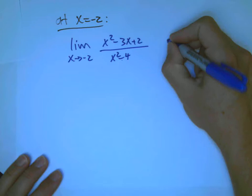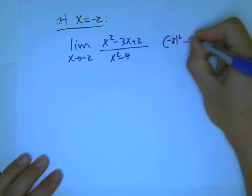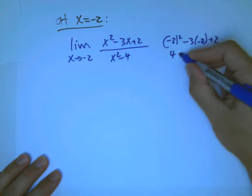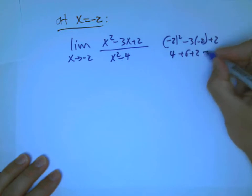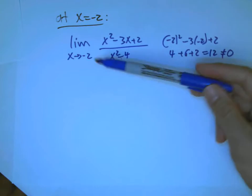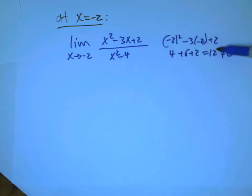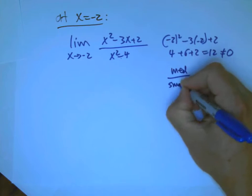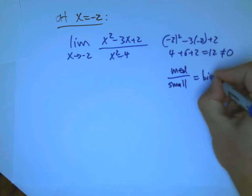You get 4 minus 2 squared minus 3 times minus 2 plus 2. That's 4 plus 6 plus 2. That's 12. That's not 0. So if I put in a number really, really close to minus 2 for x, I'm going to get something really close to 12 on top and really close to 0 on the bottom.